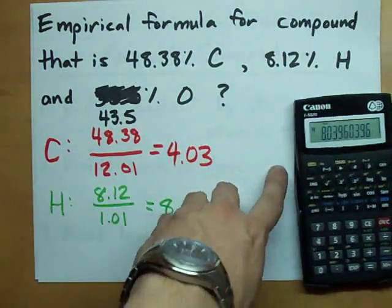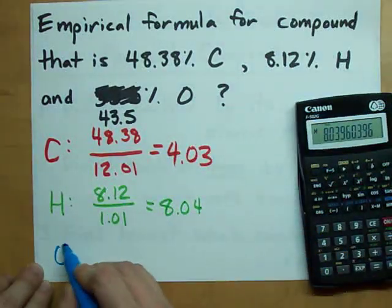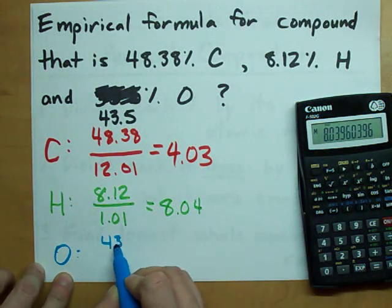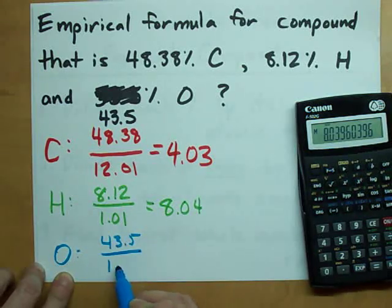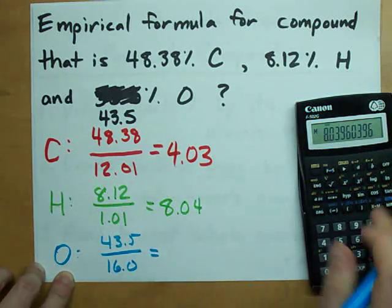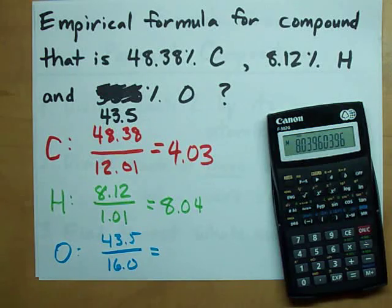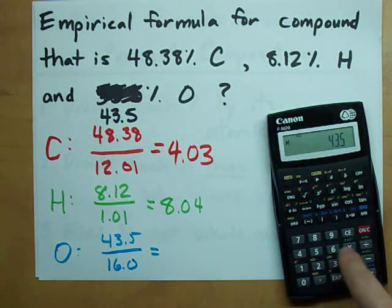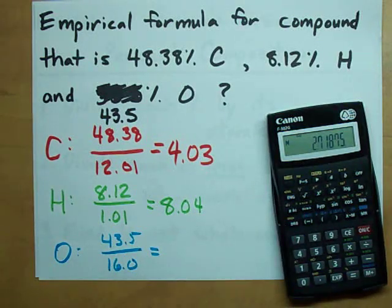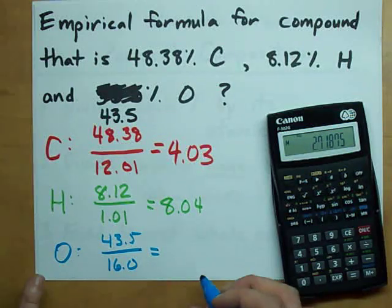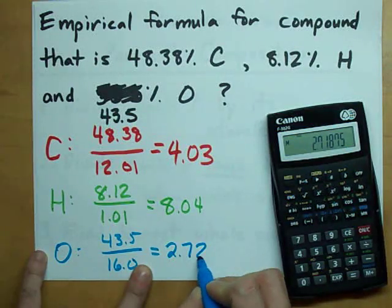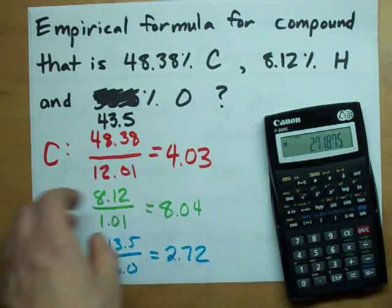And my oxygen. Oxygen's going to end up being 43.5 divided by 16.0. Percent divided by atomic mass, 43.5 divided by 16 gives me 2.72. All right, pretty sweet.